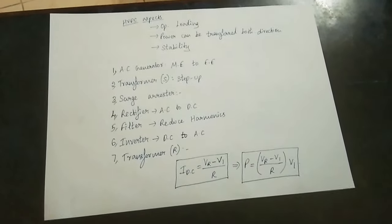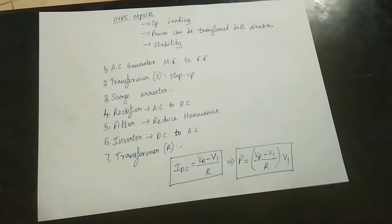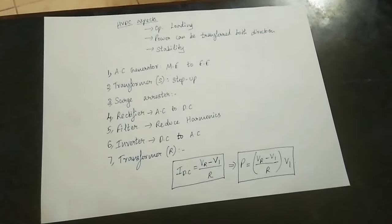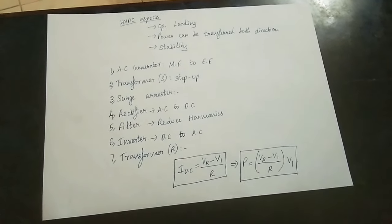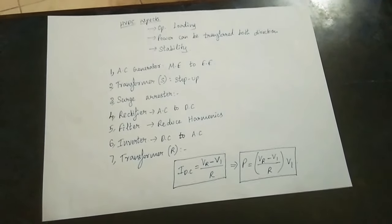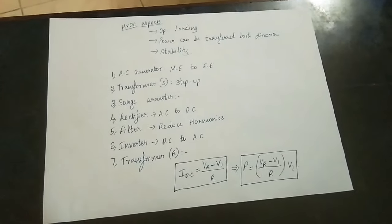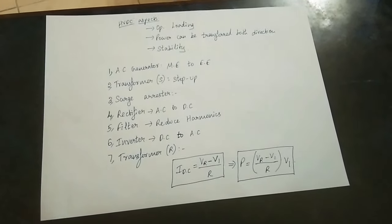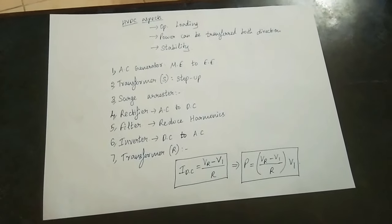Power can be transferred in both directions in an HVDC system. The stability limit is very high — the system is stable. If there are any external parameters or disturbances, the system can respond and maintain stability.